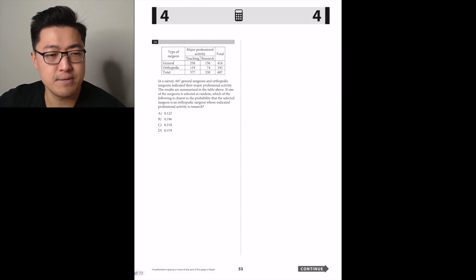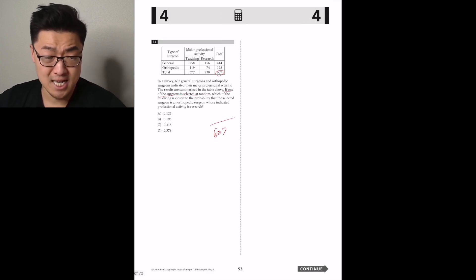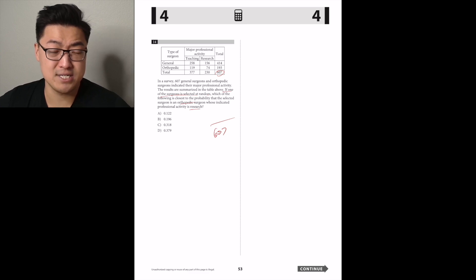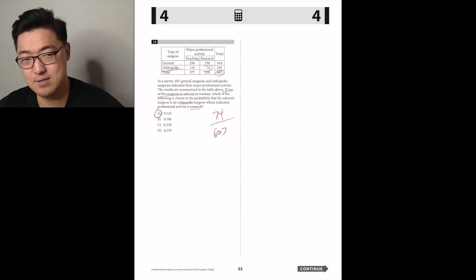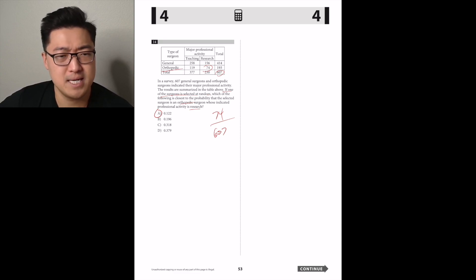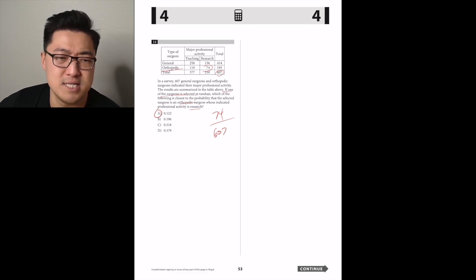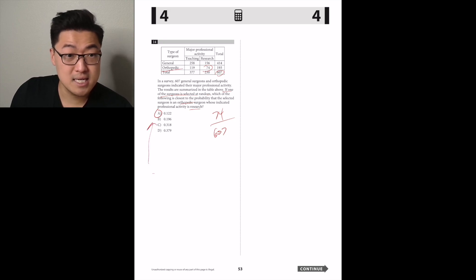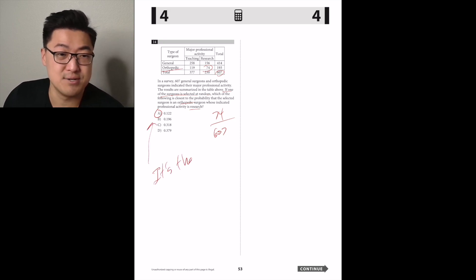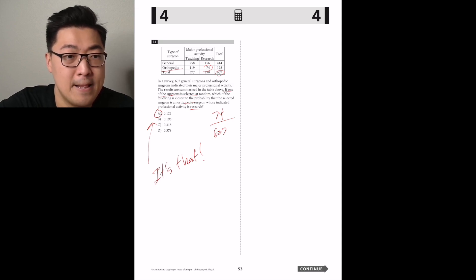In a survey, 607 general surgeons and orthopedic surgeons indicated their major professional activity. If one surgeon is selected at random, which is closest to the probability that the selected surgeon is an orthopedic surgeon who indicated research? The denominator is 607 — all surgeons. The numerator is orthopedic research, which is 74. So 74 over 607 — that's closer to 10% than 20%. Answer A.